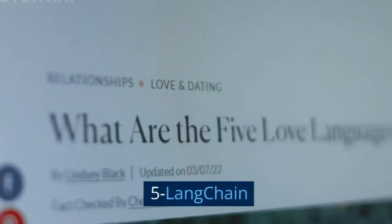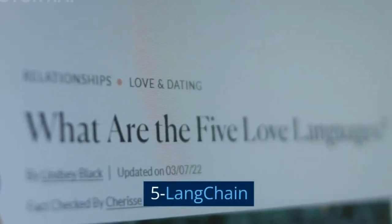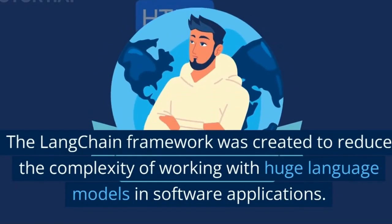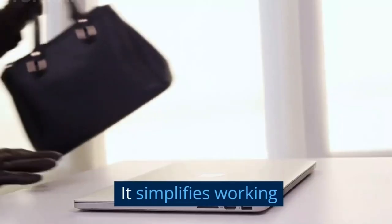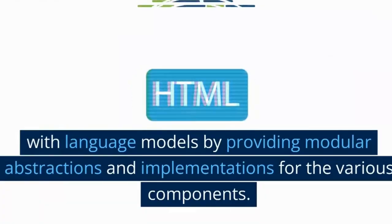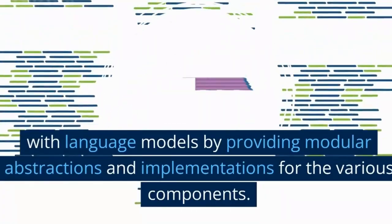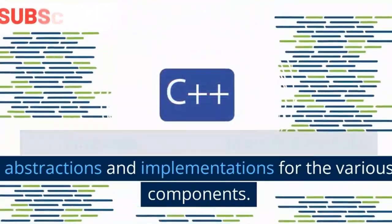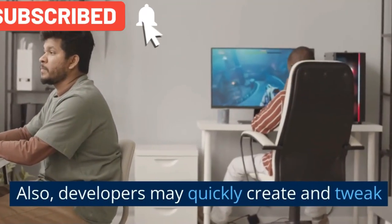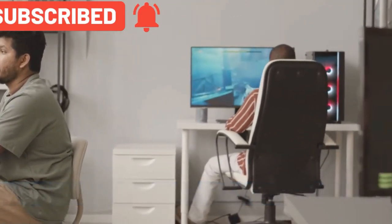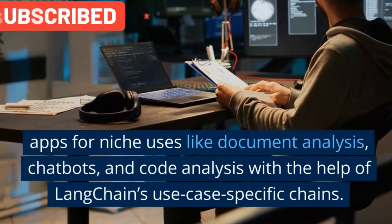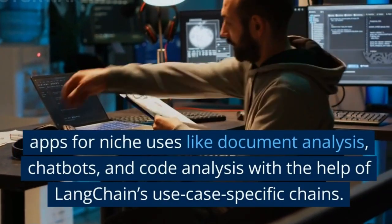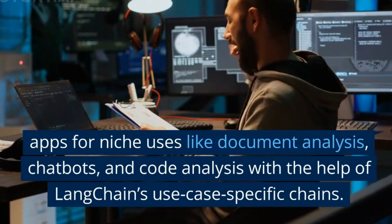Tool 5: Langchain. The Langchain framework was created to reduce the complexity of working with large language models and software applications. It simplifies working with language models by providing modular abstractions and implementations for various components. Developers may quickly create and tweak apps for niche uses like document analysis, chatbots, and code analysis with the help of Langchain's use-case-specific chains.